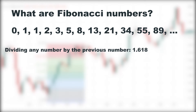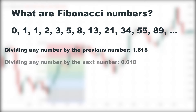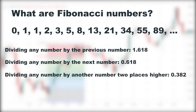If we divide any number by the previous number, the result is approximately equal to 1.618. When we move forward and the numbers increase, the result gets closer and closer to 1.618. If we divide any number by the next number which is higher, the result is approximately 0.618. And if we divide any number by another number two places higher, the result is approximately 0.382, with the result getting closer to this as the numbers increase.